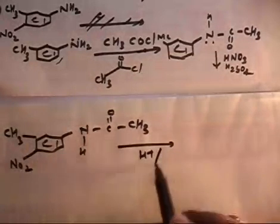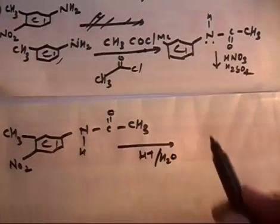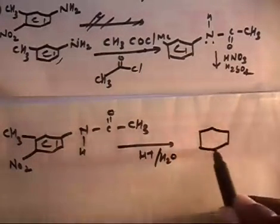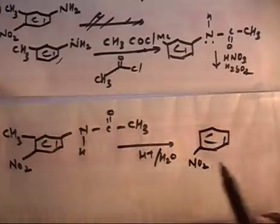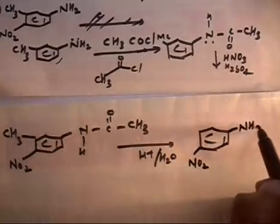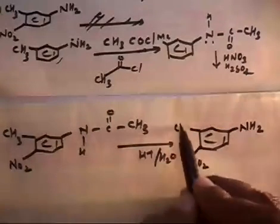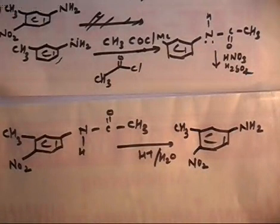Now if you further do hydrolysis — if you react with H+ and H2O — this NHCOCH3 will be further converted into amine NH2. So you add this one and you will get the desired product. This is a trick to add a nitro group in a benzene ring that contains an NH2 group. Now you can understand how to do this one.